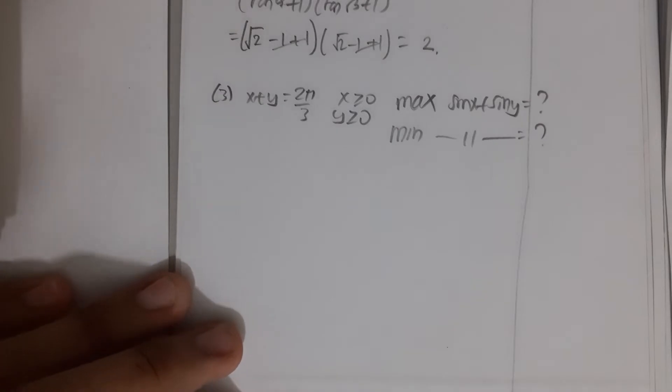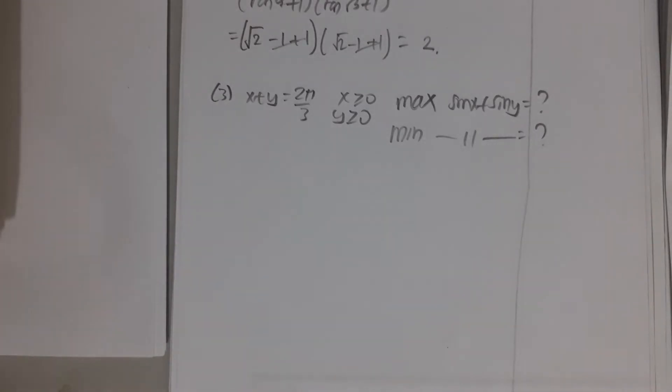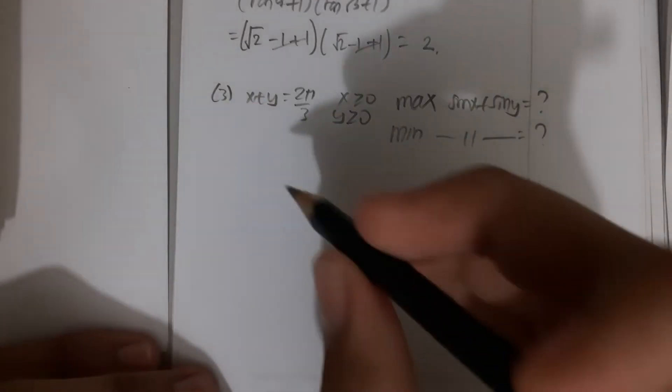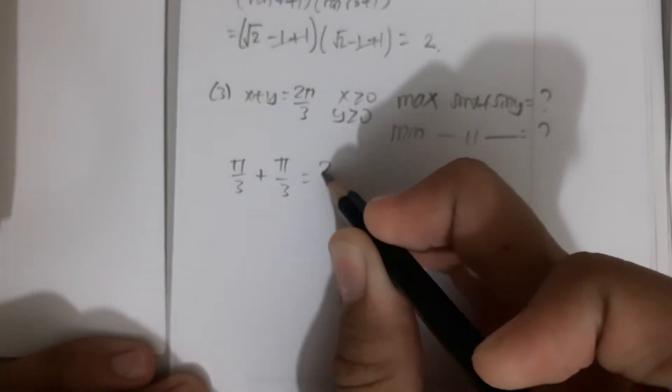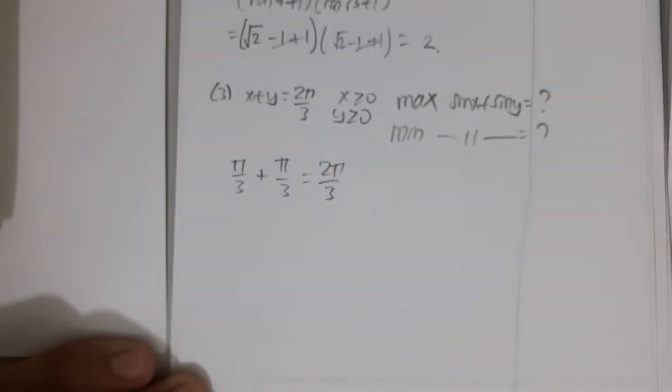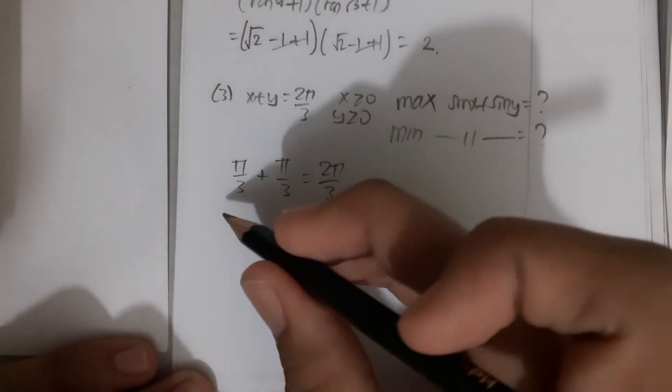The simplest way is to find the best addition for 2π/3, which is π/3 + π/3 = 2π/3. So we have sin(π/3) + sin(π/3).